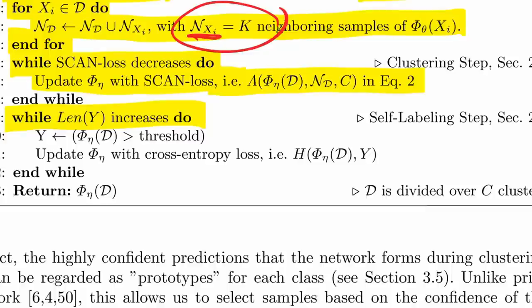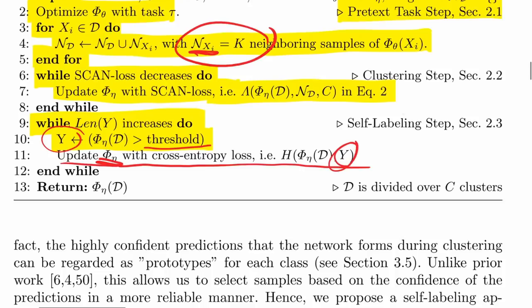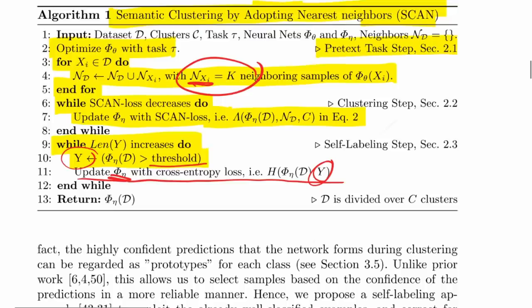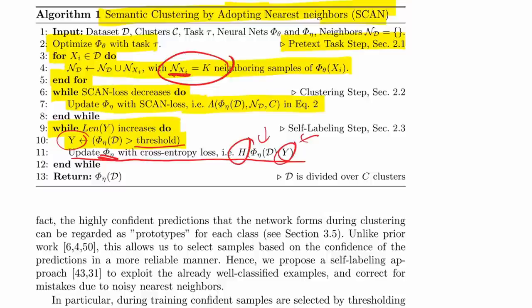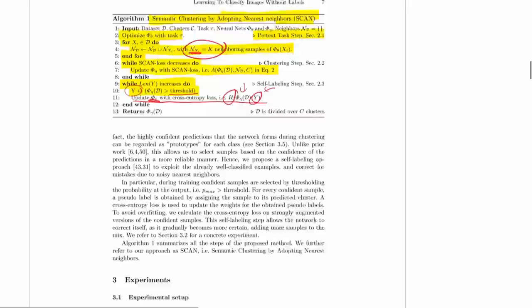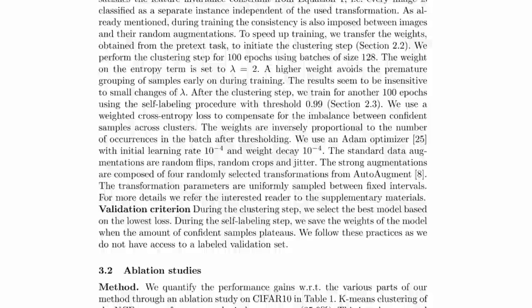After the clustering step, while the length of the confident set y increases, you filter the dataset to include only data points above a certain confidence threshold. That filtered set y is your dataset for fine-tuning, and you train the same neural network with cross-entropy loss on the assignments of the confident samples — essentially self-labeling with filtered, high-confidence points. They use a threshold of around 0.7.